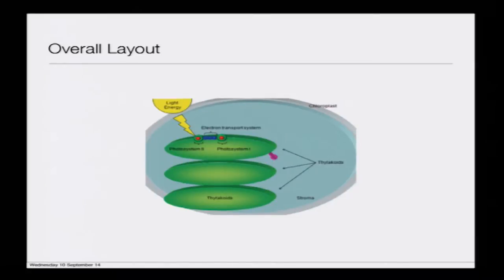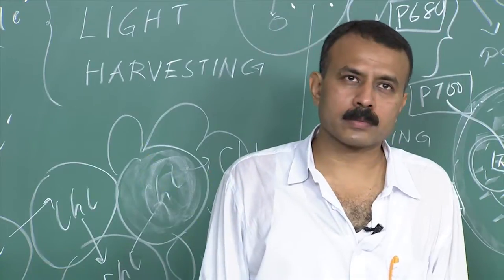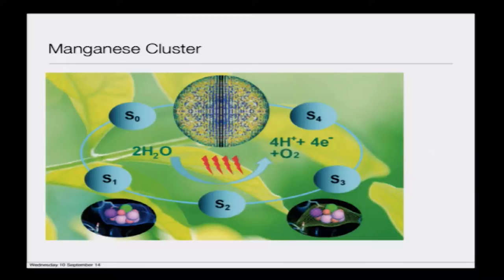Moving on to the manganese cluster — the critical part where water gets split. This is the inspiration for making photoelectrochemical cells in modern times. There are several theories about exactly how it takes place, but I will try to simplify it in an understandable way and give references you can go through to appreciate it much better.